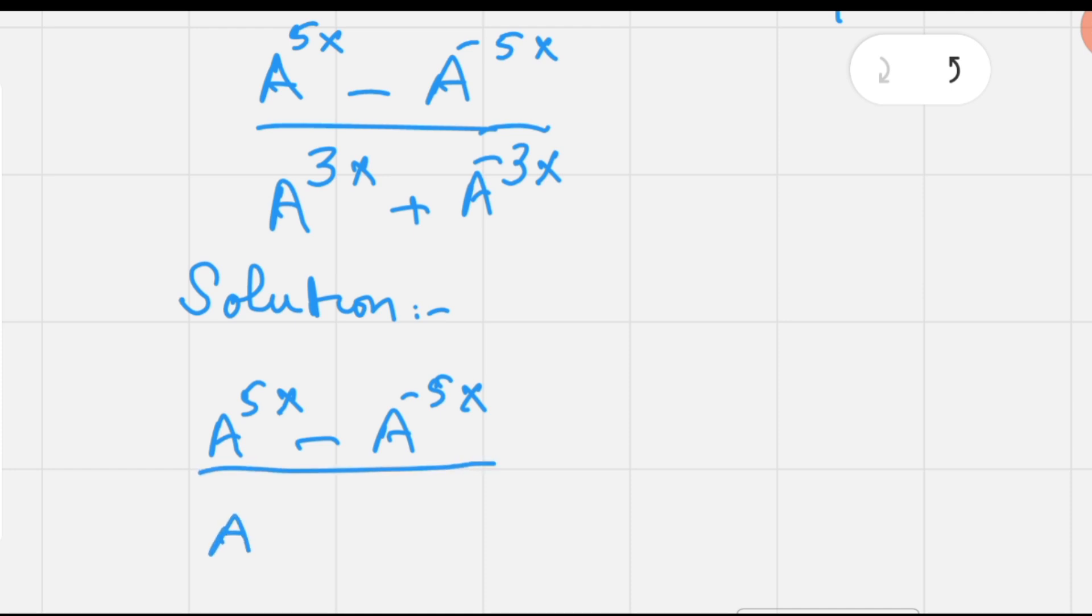Since the given value is in the form of exponent 2x, we have to convert all these exponents in such a way that they are multiples of 2, so that we can write these exponents in terms of A^(2x) whole raised to some power.